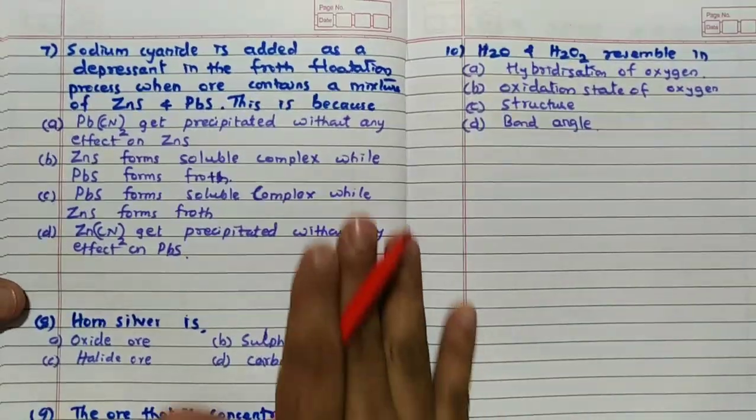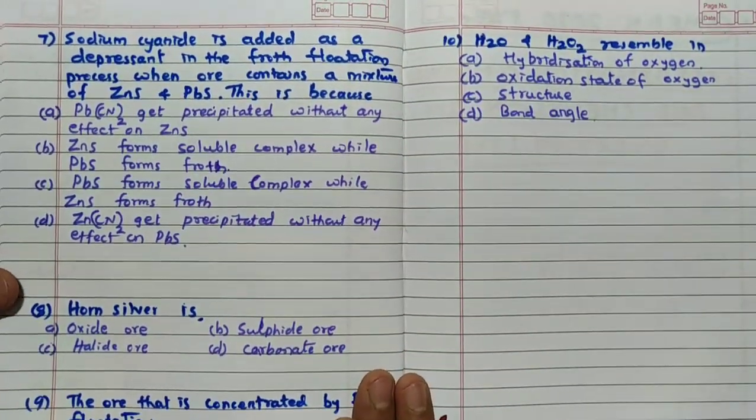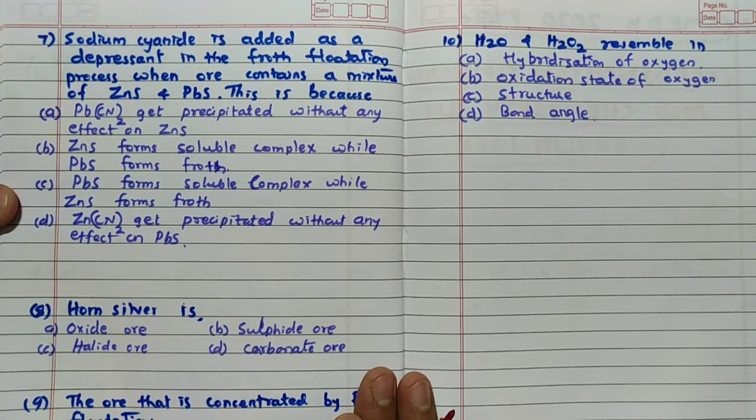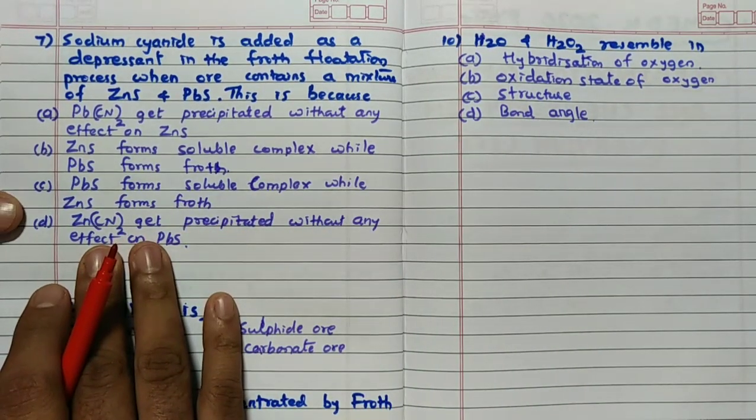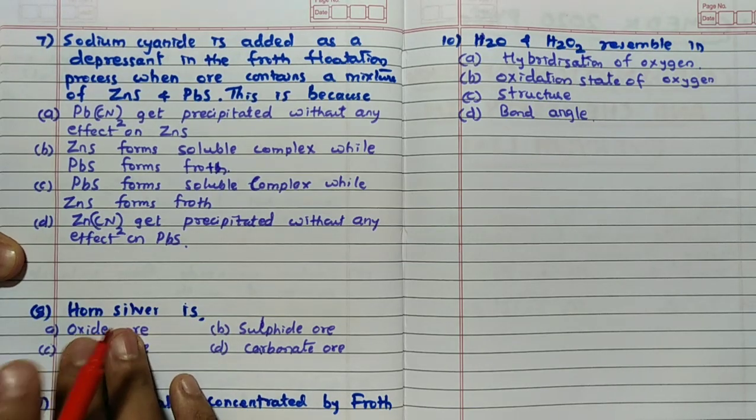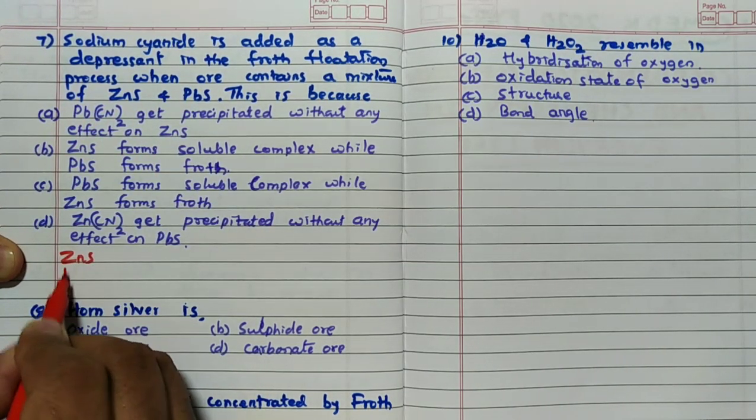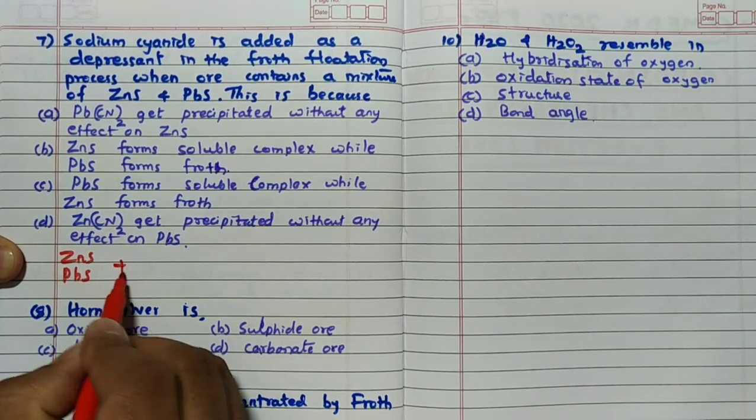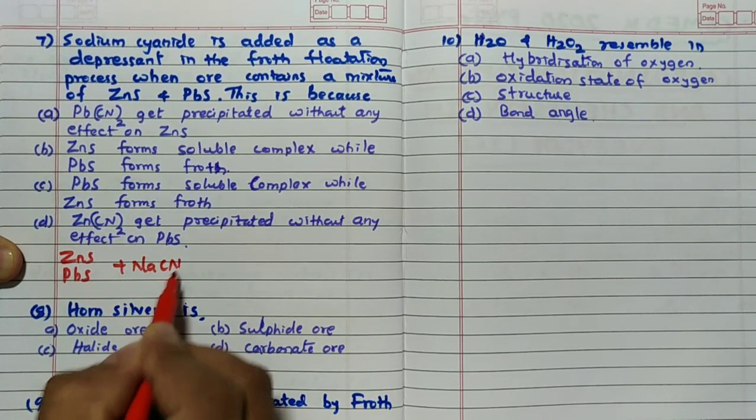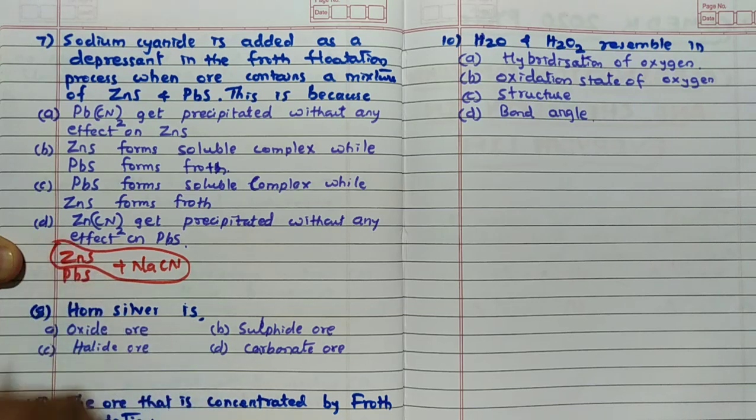Sodium cyanide is added as a depressant in the froth flotation process when ore contains a mixture of ZnS and PbS. This is because, now ZnS and when PbS is present, remember out of ZnS and PbS, depressant NaCN will react with only ZnS.